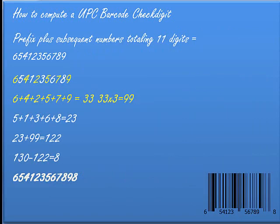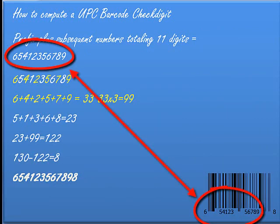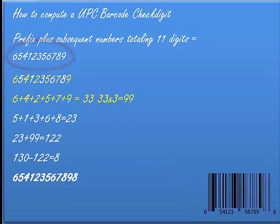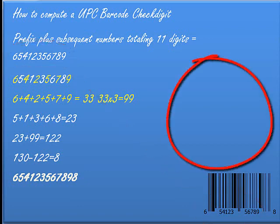Here's how you do it. You have that prefix plus the subsequent numbers totaling eleven digits. For the sake of this presentation, let's say the prefix is 6-5-4-1-2-3. The next five numbers that we're going to use, maybe in sequence, are 5-6-7-8-9. You take that entire number and treat the odd and even position digits differently.